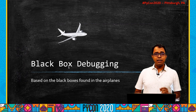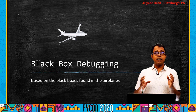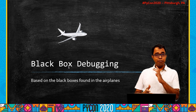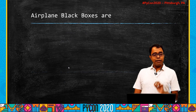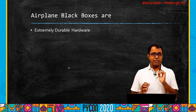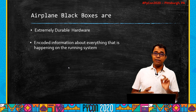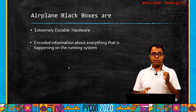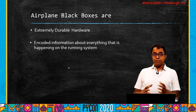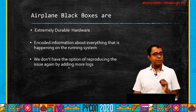Let's first talk about Black Box. Whenever you hear the term Black Box, what comes to your mind? The picture of an airplane. Black boxes are generally associated with airplanes, and black box debugging is actually inspired by them. Airplane black boxes are extremely durable hardware, made to survive extremely harsh conditions. They have all information about the running system in real time, and that information is encoded — specialized labs across the world are needed to decode it.